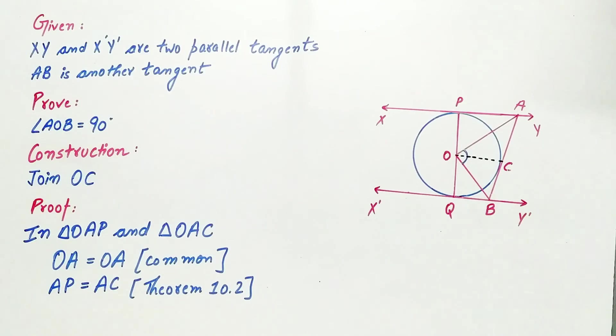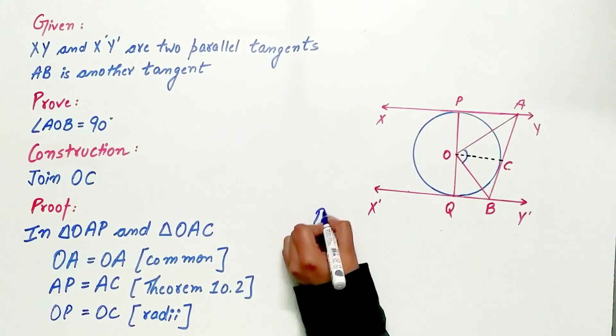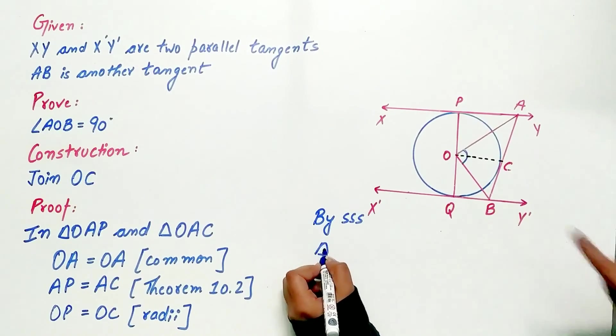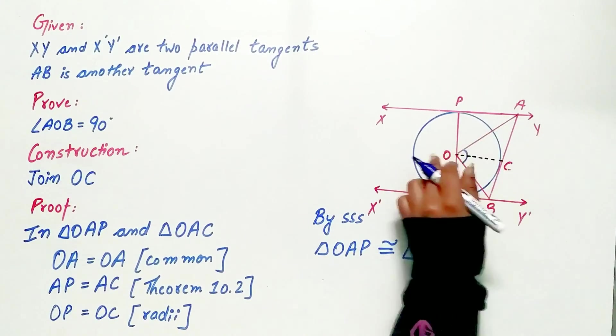Why? Because they are the radius of the circle. So by SSS, triangle OAP is congruent to triangle OAC.